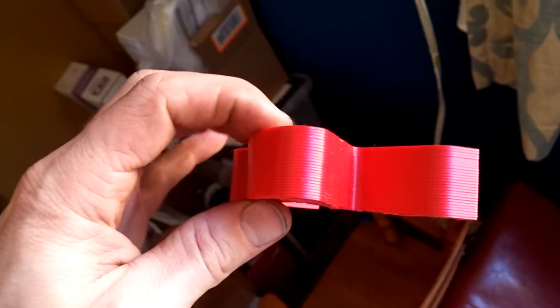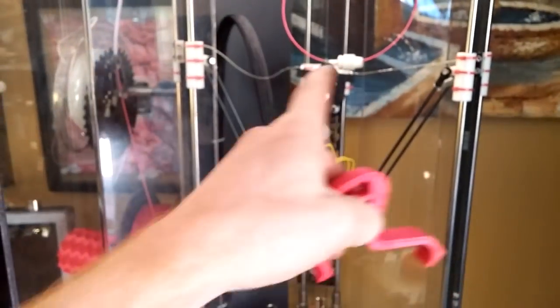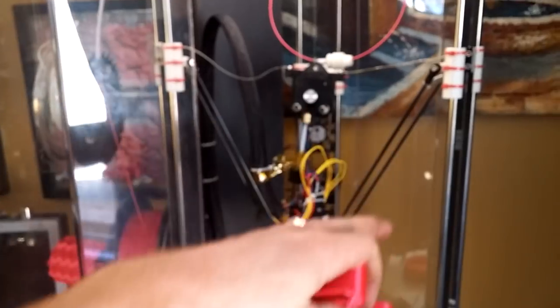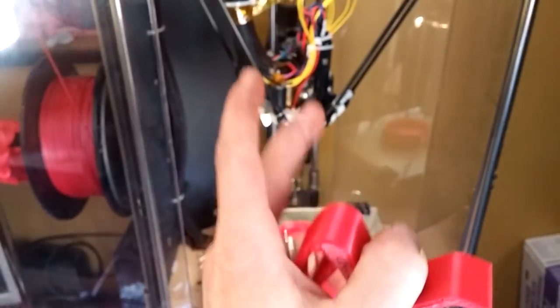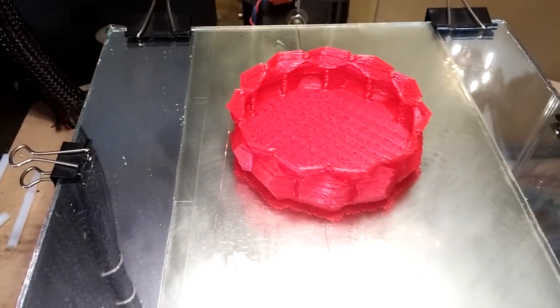One reason could be your Z height—slop in your belts on a delta system, or on XYZ coordinates you could have slop in your Z or a bent Z axis or something like that. However, the other reason you get this is actually because of the filament not coming out right.